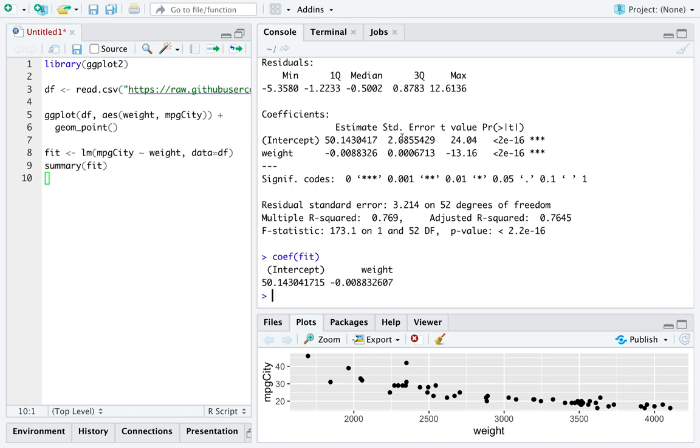And then standard errors, which are the estimates of the sampling distribution for estimates of the standard deviation of the sampling distribution for each of the coefficients in turn. So you can see there's a lot less noise on the slope than there is on the intercept.